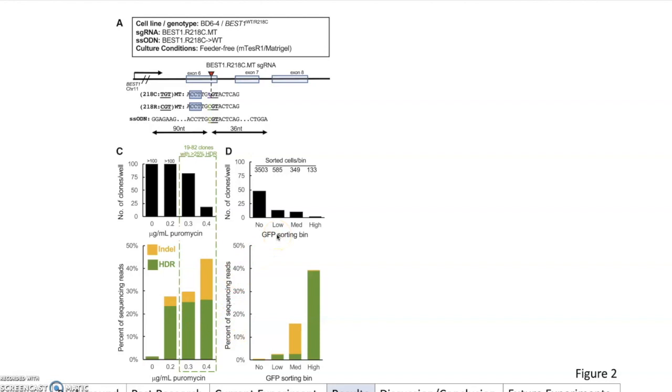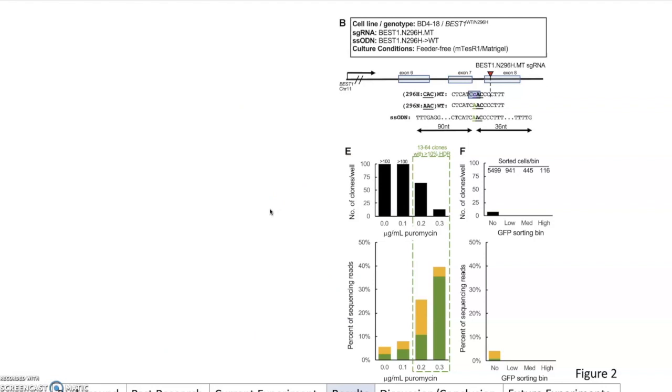What they want to do is compare this method of puromycin treatment to the reporter transfection with that Cas9 protein in the GFP. Instead of the PAC-resistant gene, they added that GFP, and they did the same thing. In Figure 2D, you have the number of clones per well on that y-axis, and then GFP sorting bin. They sorted it with no fluorescence, low GFP fluorescence, medium fluorescence, and then high fluorescence. Immediately, you can see that these two graphs have very different amounts of clones. The GFP, when you sort into the bins, the cells have a really high chance of dying, which they did.